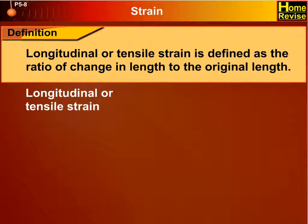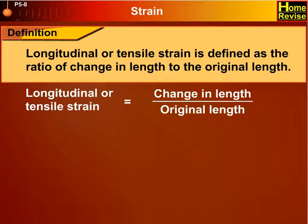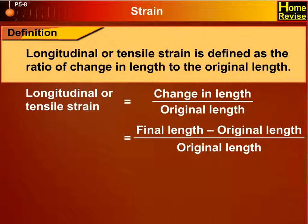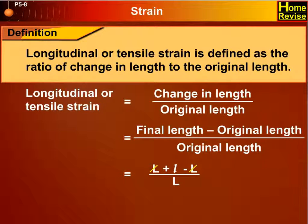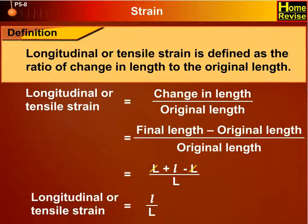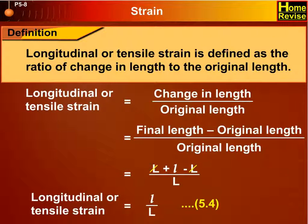Longitudinal or tensile strain equals change in length upon original length, which equals final length minus original length upon original length. That equals (L + ΔL) − L upon L; the L terms cancel, so longitudinal or tensile strain equals ΔL upon L. This is equation 5.4.